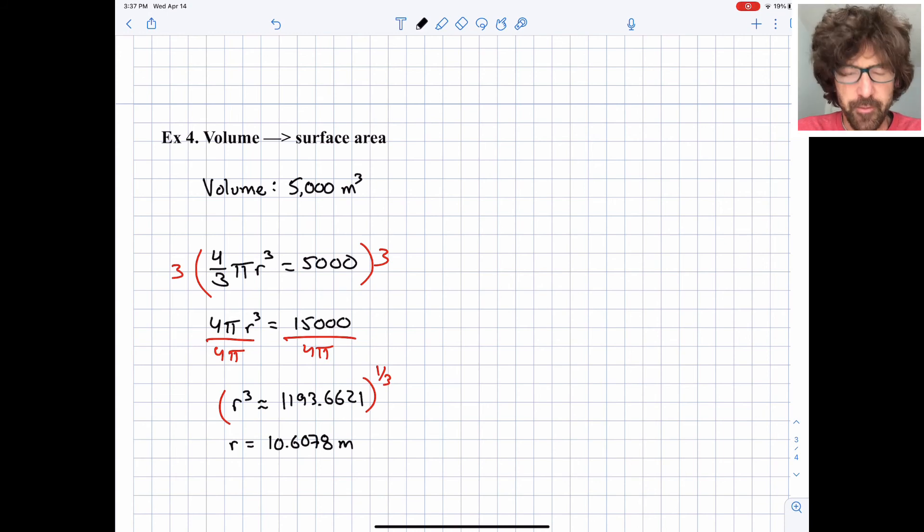This is a hard enough problem that I want to kind of check my work. I'm going to think about, what if we had a 10-meter radius sphere? What would be the volume? So as a little bit of an aside, I'm going to do 4/3 times π times 10³ and see if I get somewhere in the range of 5,000. And I get 4,188. That gives me a little bit of confirmation that I'm on the right track here. We shouldn't get exactly 5,000 because 10 is definitely different from 10.6. But just a way of checking to see if we're in the ballpark.